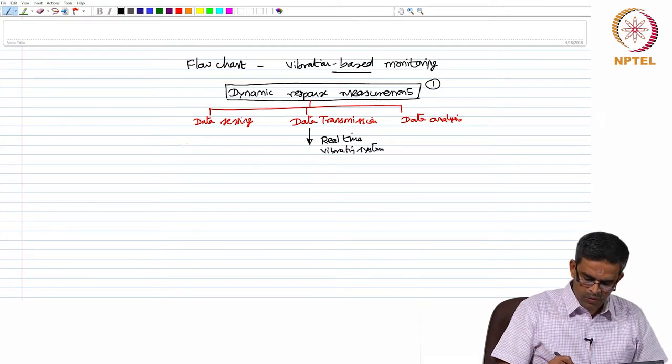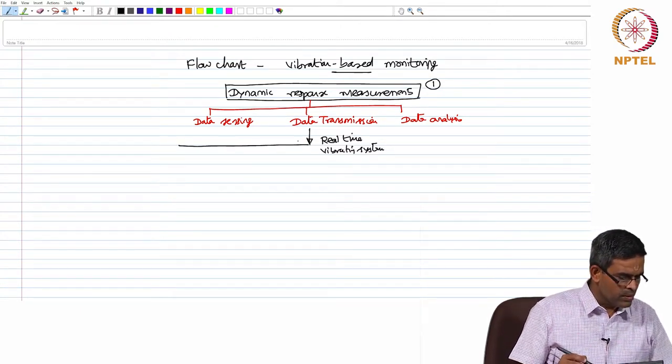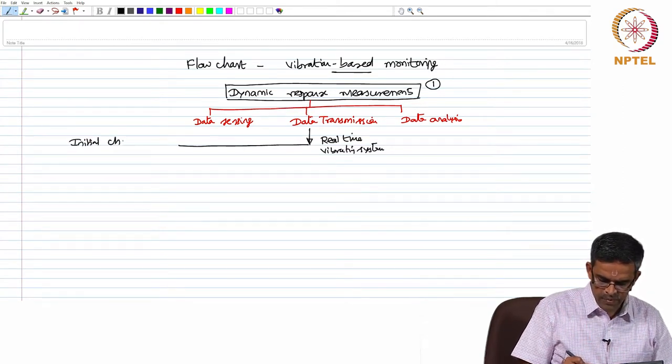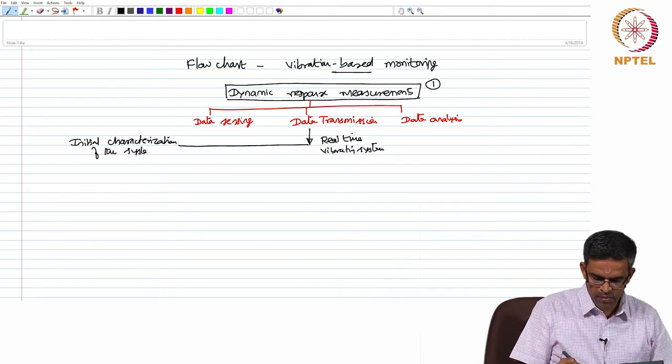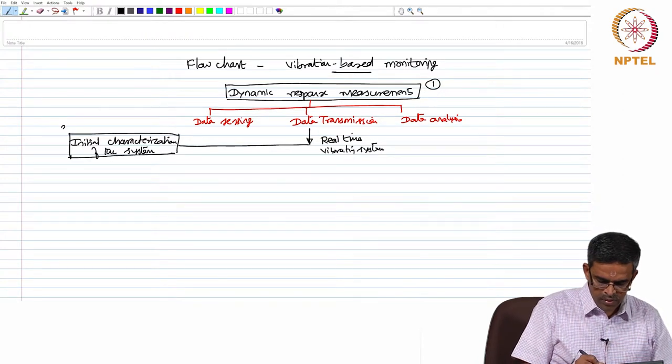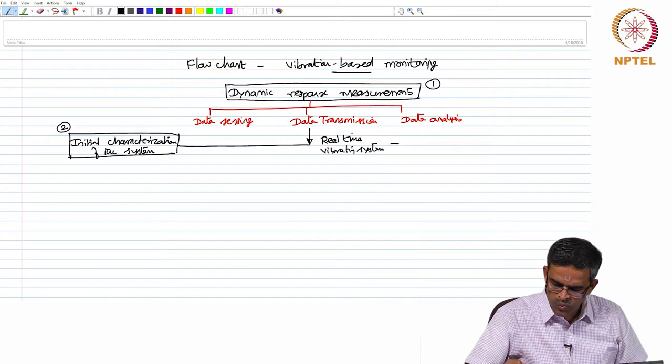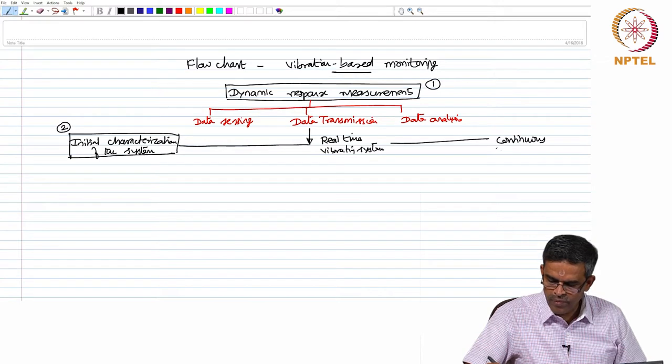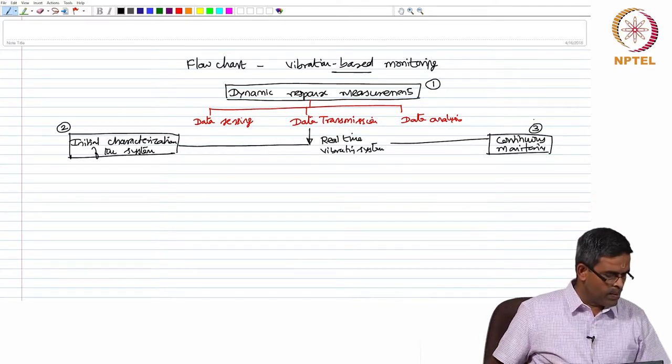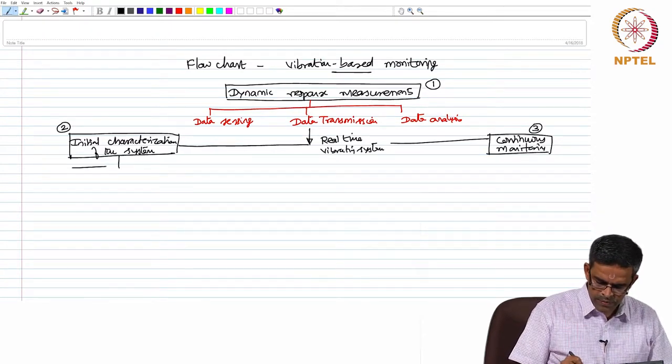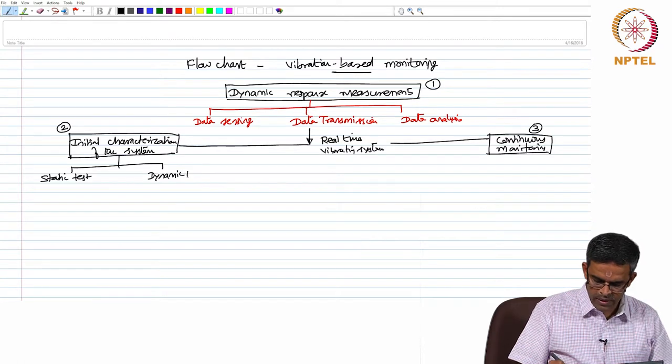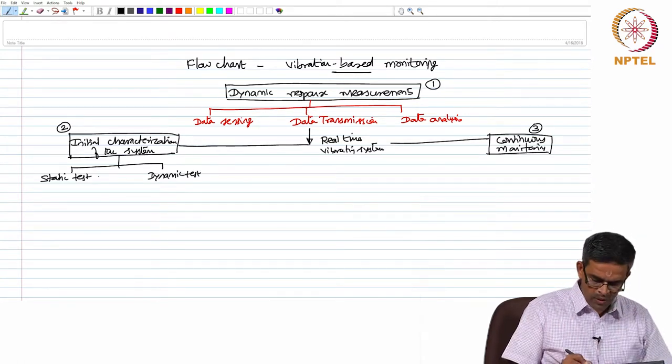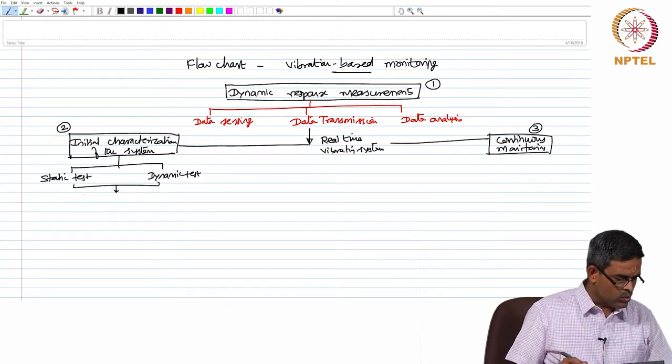We will be able to get initial characterization of the system, this is the second step. Parallelly, one can also do continuous monitoring. In initial characterization, we can achieve the results by two ways: one is the static test, other is the dynamic test. Both of this data will be useful to prepare a baseline model.